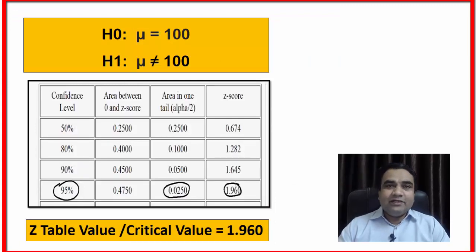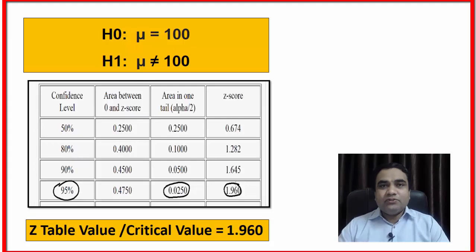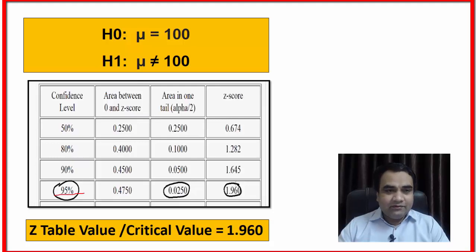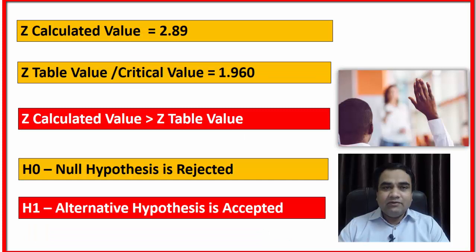Now we find the z table value and z critical value. To find these, we need the confidence level, which requires the significance level. If the significance level is 5 percent, then the confidence level is 95 percent. This is a two-tail test, and the z critical value is 1.960. Comparing our z calculated value of 2.89 with the z table value of 1.960, since 2.89 is greater than 1.960, we reject the null hypothesis and accept the alternative hypothesis. Therefore we conclude that the average IQ of the adult population has changed.